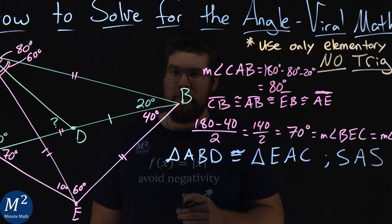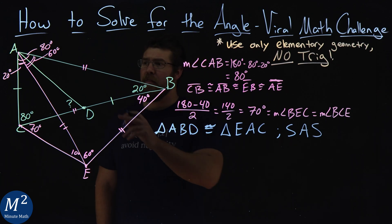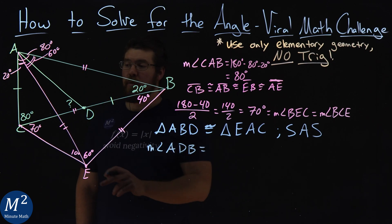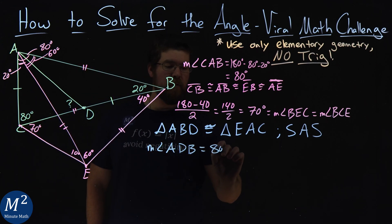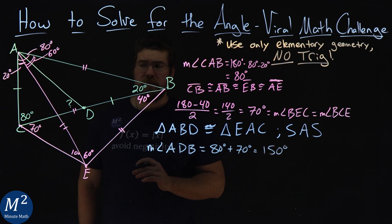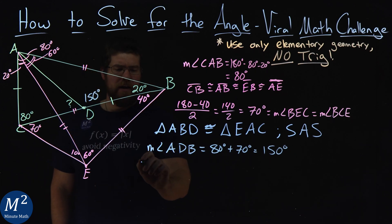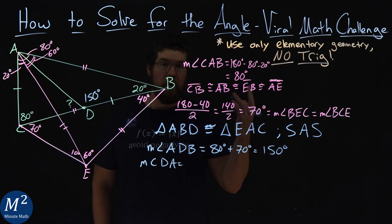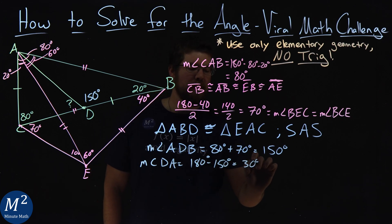Since triangles ABD and EAC are congruent by SAS, the measurement of angle ADB has to equal 80 plus 70 degrees — matching the corresponding angle in triangle EAC. So 80 degrees plus 70 degrees equals 150 degrees. With that, we can now find angle CDA: 180 minus 150 gives us 30 degrees.